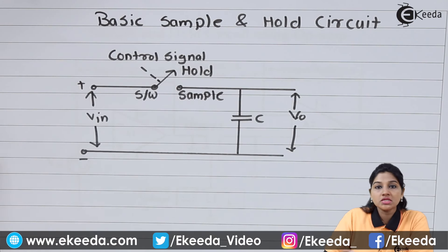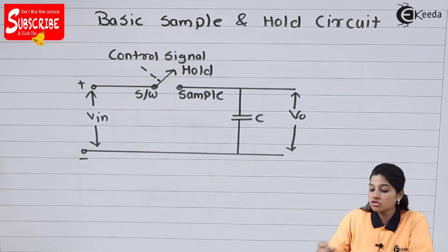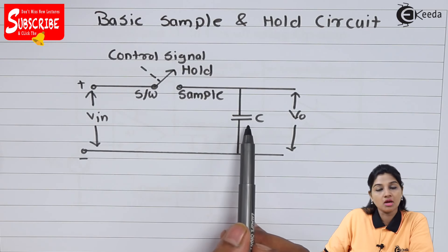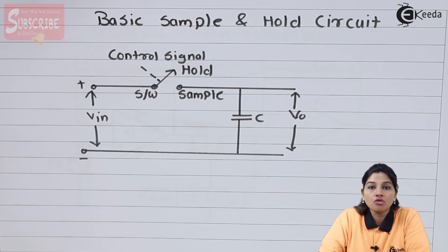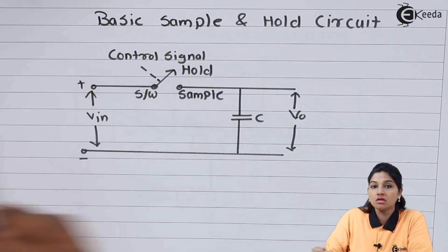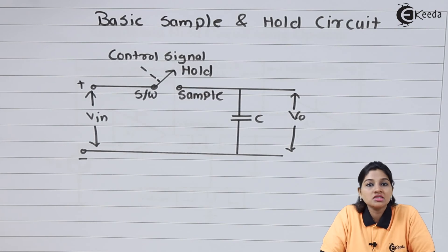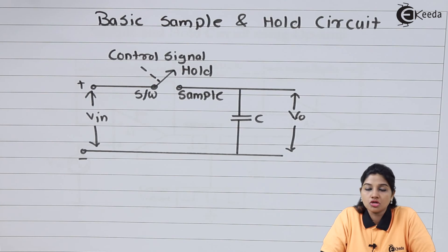The figure shows a basic sample and hold circuit which consists of one input, one output, one switch, and one capacitor. The switch is controlled by using a control signal. The switch can be used either as a BJT or as a MOSFET, and when they are properly biased, they can be used as a switch.